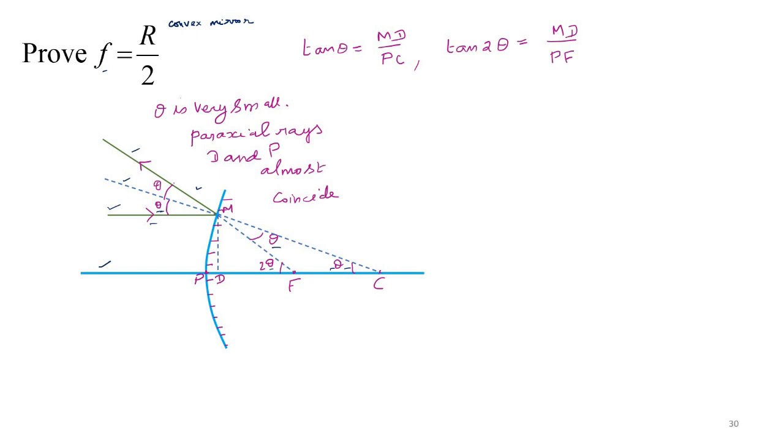Similarly, tan 2 theta, MD by PF. Angle MDF is there, you know. Sorry, triangle MDF is there, you know. This is 2 theta. Opposite is MD. Adjacent is DF. But it can be written as PF.